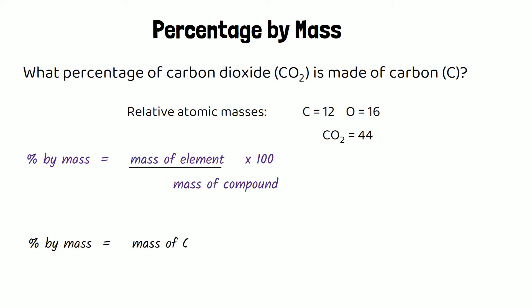For this example, we need the relative atomic mass of carbon — the element we've been asked about — divided by the relative formula mass of CO₂, then times by 100. That's 12 divided by 44, times 100, which gives us a percentage by mass of 27.3%. That tells us that 27.3% of the mass of carbon dioxide is made of carbon, and the rest would be made of oxygen.